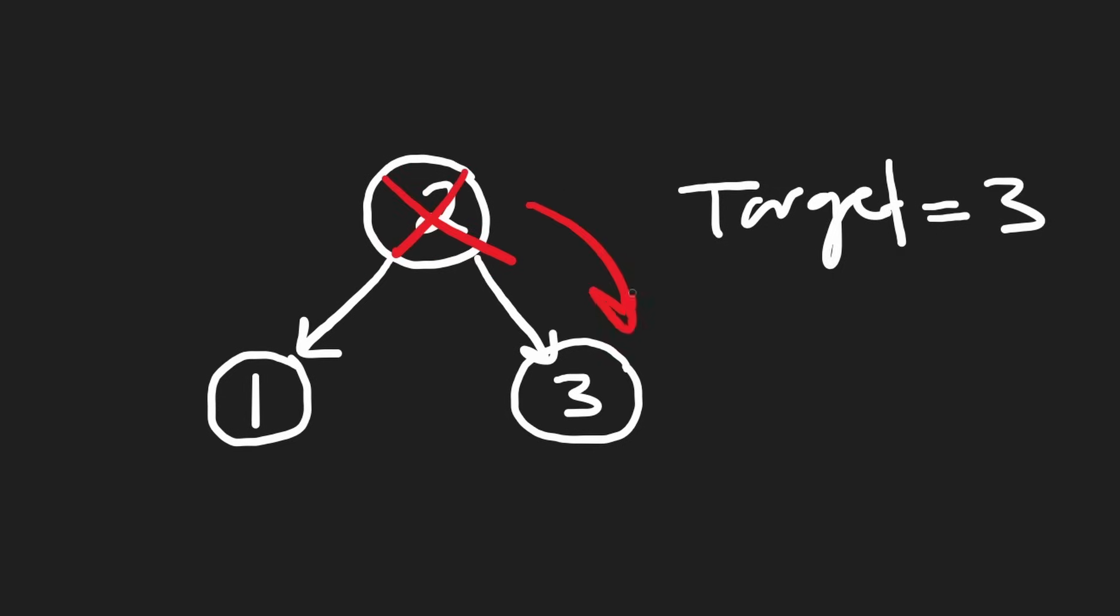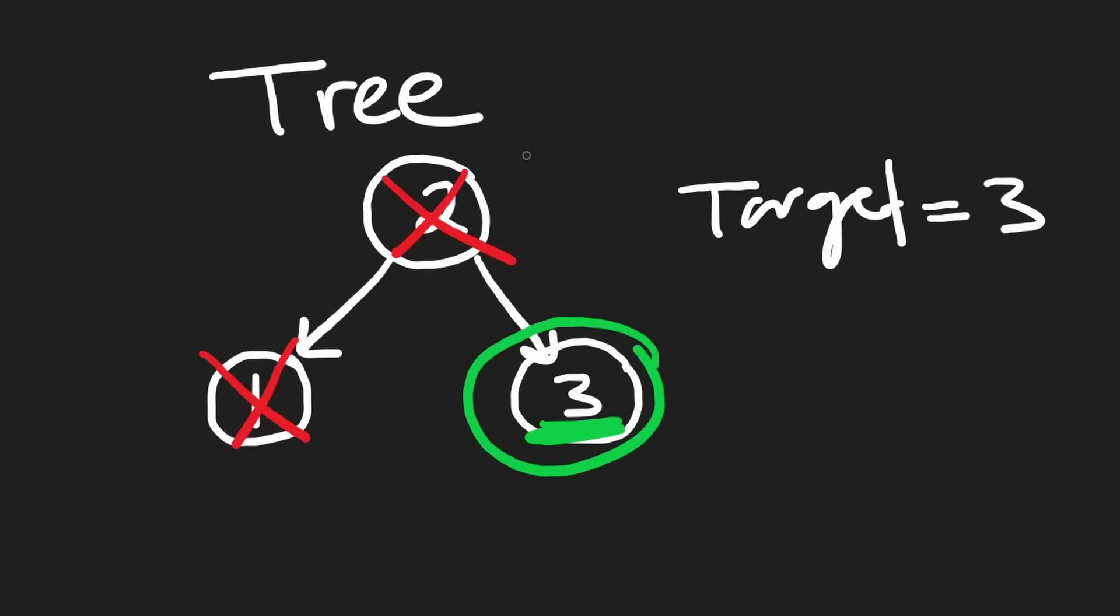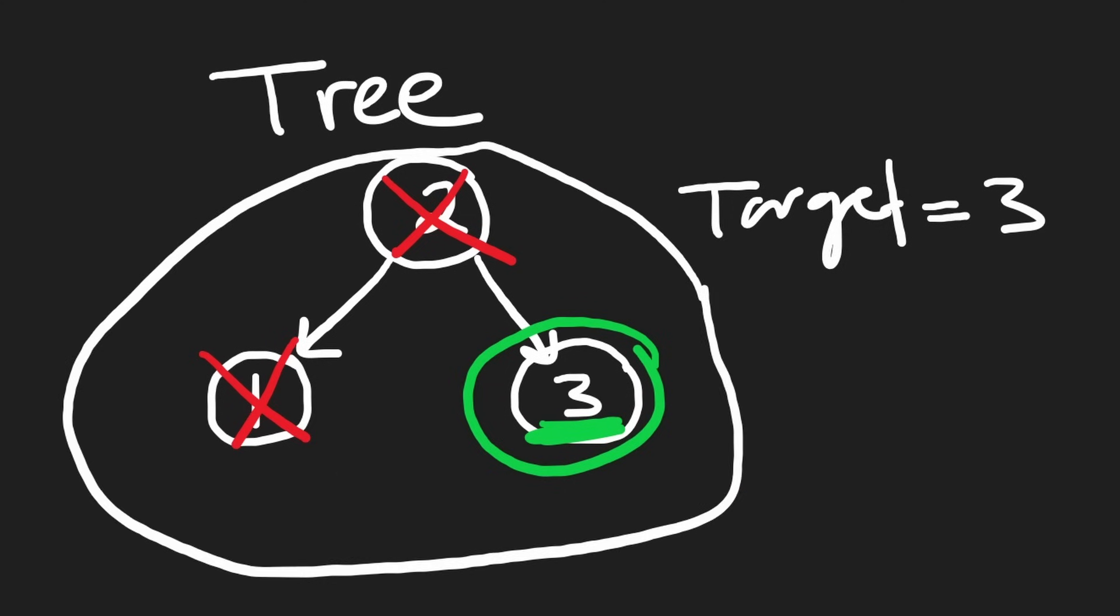we're going to traverse towards the right because that's where all values larger than two would be in a binary search tree. Then you look at this value, and with binary search, you do find the target and can return true. The only problem is that I said this was a tree. I never said it was a binary search tree. I gave you an example that was kind of misleading because it looked like a binary search tree. The values were in order, but the candidate assumed it was a binary search tree. And that's what you don't want to do.